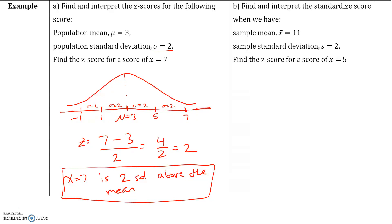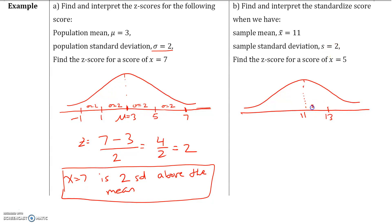Here's another example. Now we have a sample where the sample mean x-bar equals 11. Standard deviation is again 2, which means one standard deviation puts us at 13. If we go another standard deviation, this gives us 15. Going the other way, one standard deviation below the mean gives us 9, two standard deviations gives us 7, and three standard deviations gives us 5.